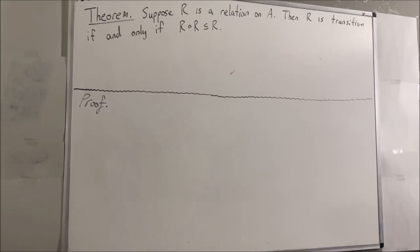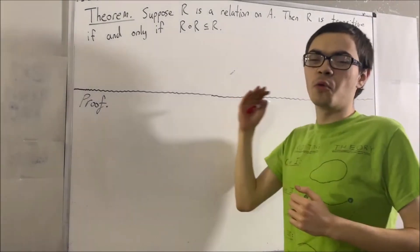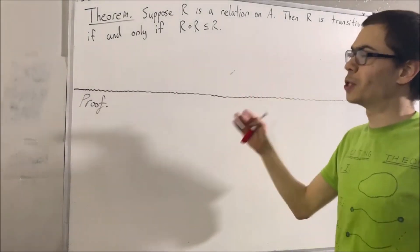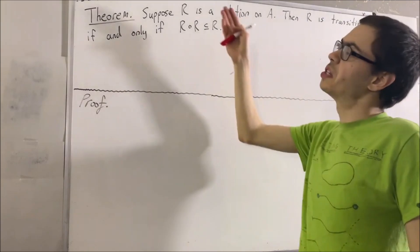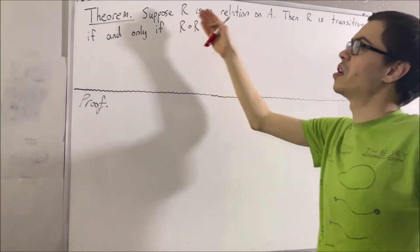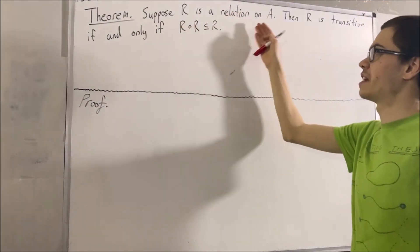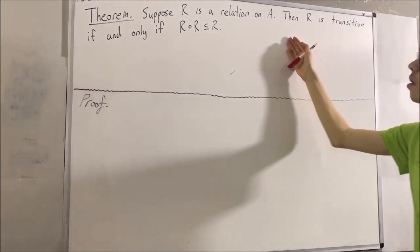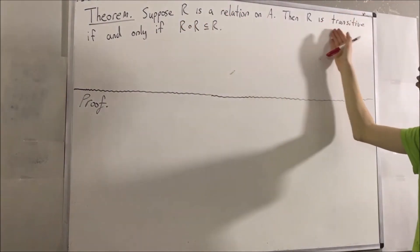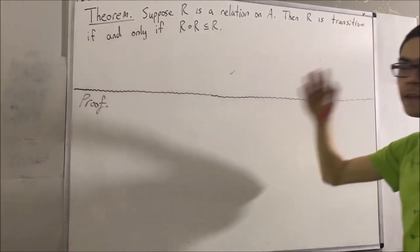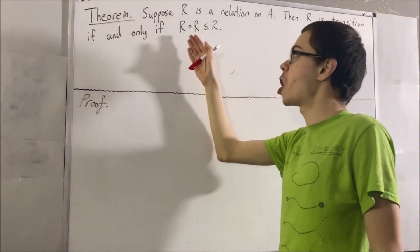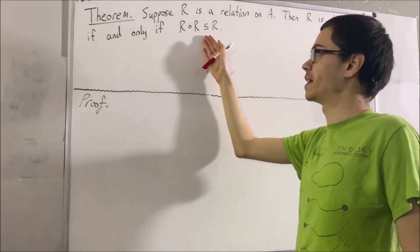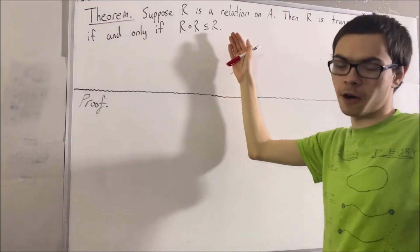Hello! In this video, we are going to prove the following theorem: Suppose R is a relation on A. Then R is transitive if and only if R compose R is a subset of R.